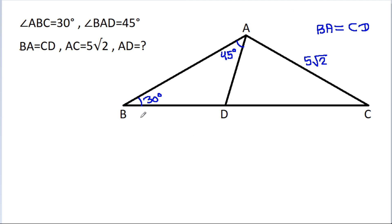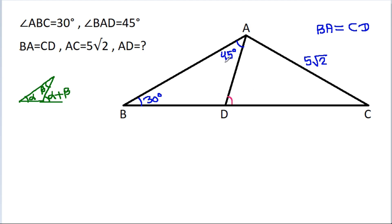In any triangle, if one angle is α and another is β, then the exterior angle equals α plus β. So this angle will be 45 degrees plus 30 degrees, which equals 75 degrees.